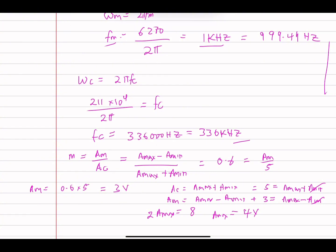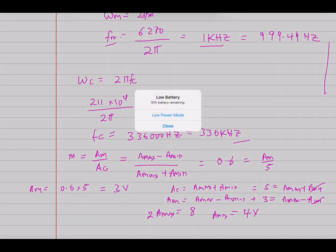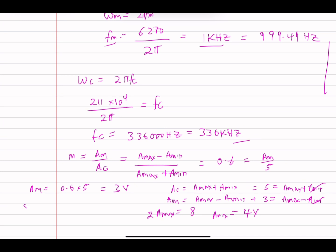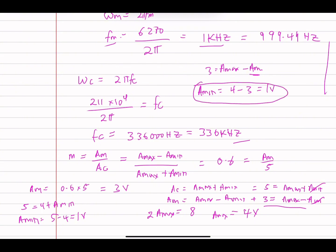Substituting Amax = 4 volts into the first equation: 5 = 4 + Amin, giving Amin = 1 volt. We can verify using the second equation: 3 = 4 - Amin, so Amin = 4 - 3 = 1 volt. Either equation confirms Amin = 1 volt. So the maximum amplitude is 4 volts and the minimum amplitude is 1 volt.